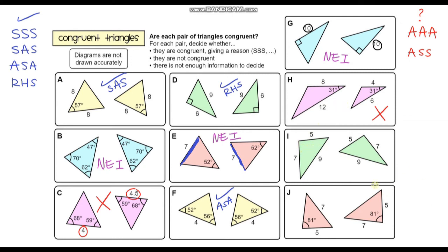For question I, we've got two lengths that are 5, two lengths that are 7, and two lengths that are 9 — all three side lengths are the same. That means they are congruent. If we have all three side lengths the same, then they are congruent. So that would be SSS.